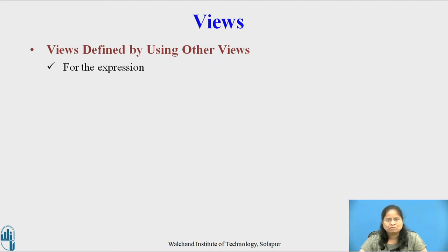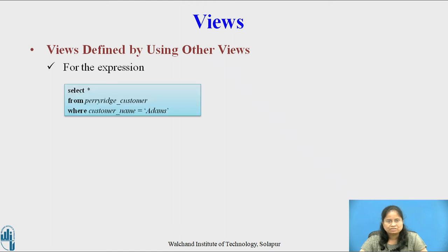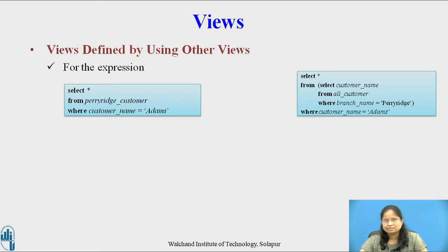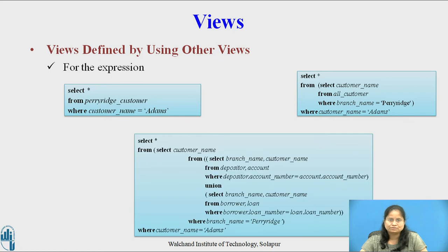The view expansion proceeds as follows. The first expression is SELECT * FROM perirage_customer WHERE customer_name = 'Adams'. The relation perirage_customer in the FROM clause is replaced by SELECT customer_name FROM all_customer WHERE branch_name = 'Perirage'. Then the relation all_customer in the FROM clause is replaced by SELECT branch_name, customer_name FROM depositor, account WHERE depositor.account_number = account.account_number UNION SELECT branch_name, customer_name FROM borrower, loan WHERE borrower.loan_number = loan.loan_number.